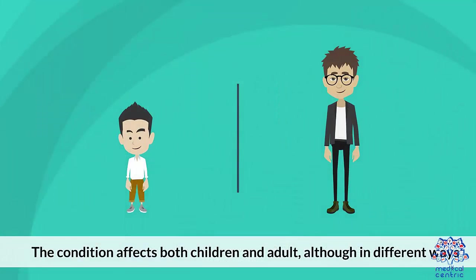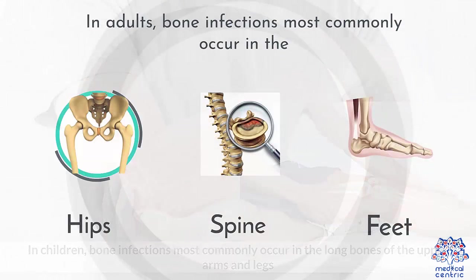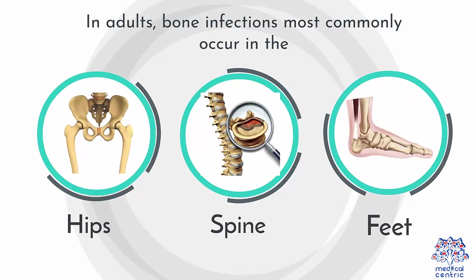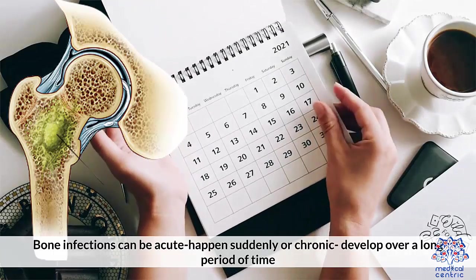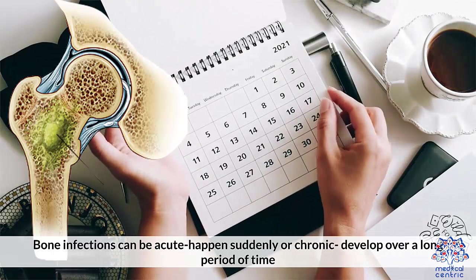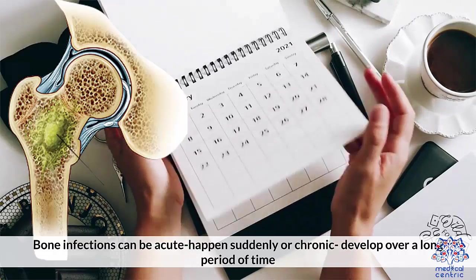The condition affects both children and adults, although in different ways. In children, bone infections most commonly occur in long bones in the upper arms and legs. In adults, bone infections most commonly occur in the hips, spine, and feet. Bone infections can be acute, happening suddenly, or chronic, developing over a long period of time.